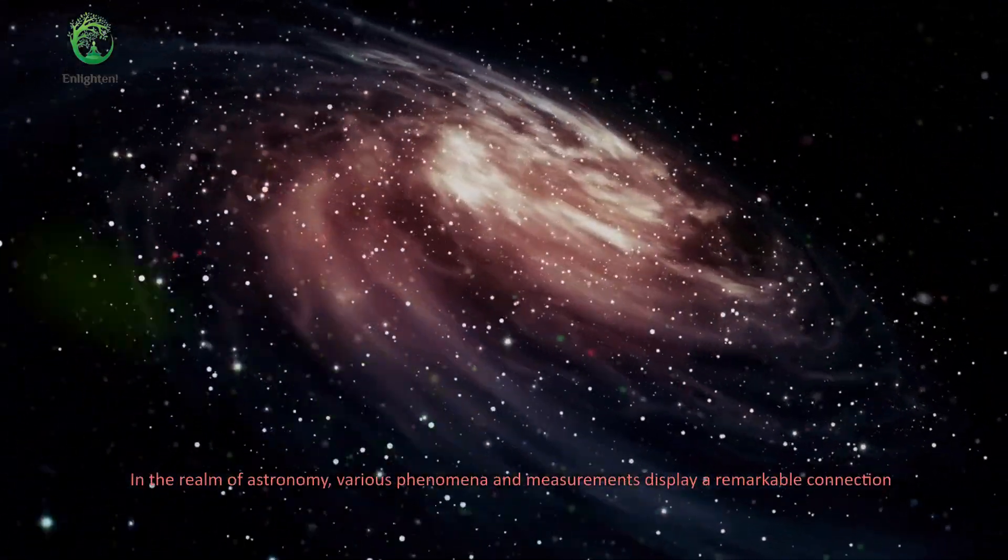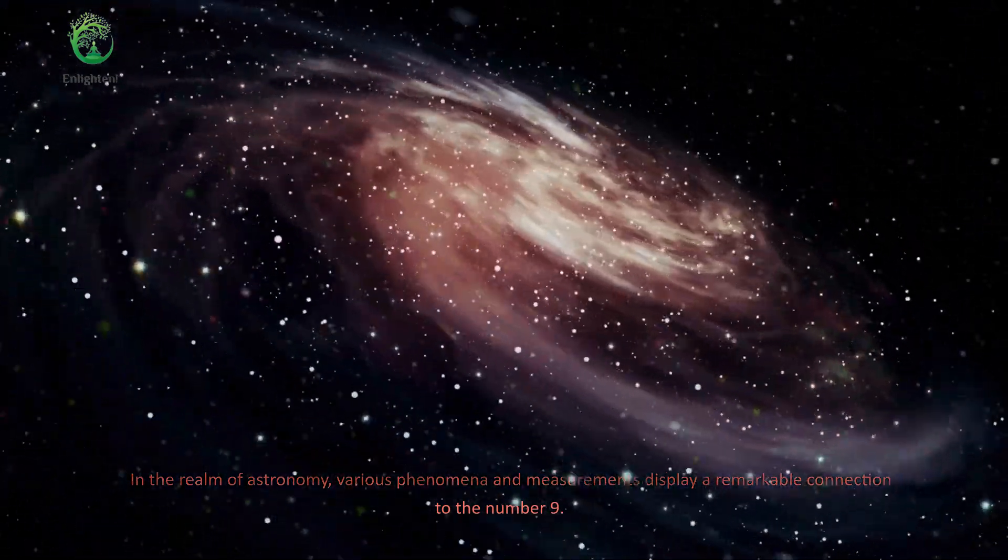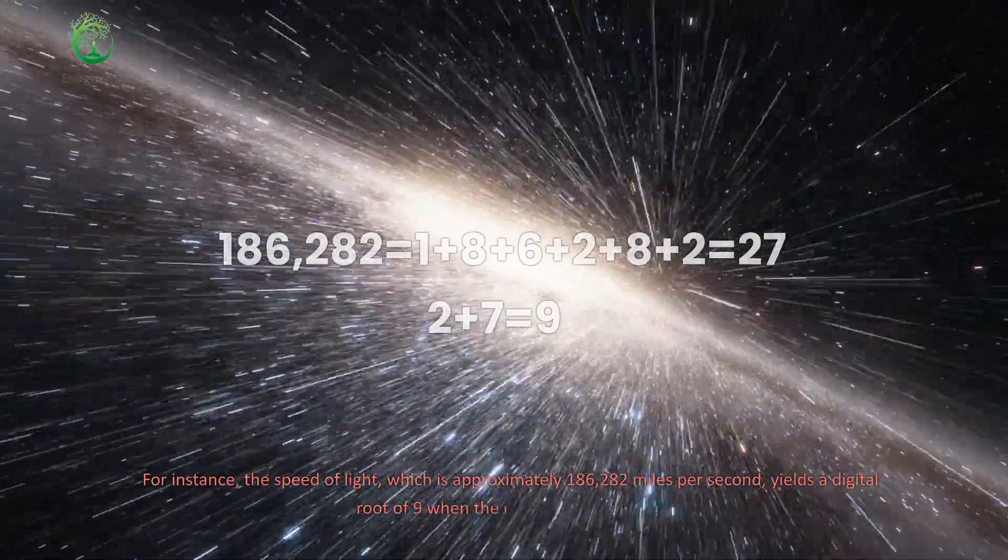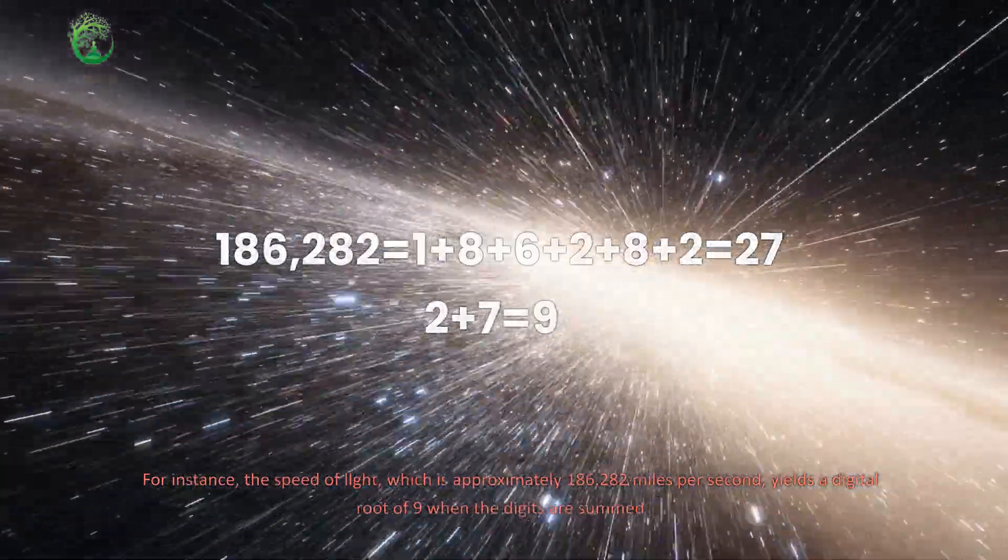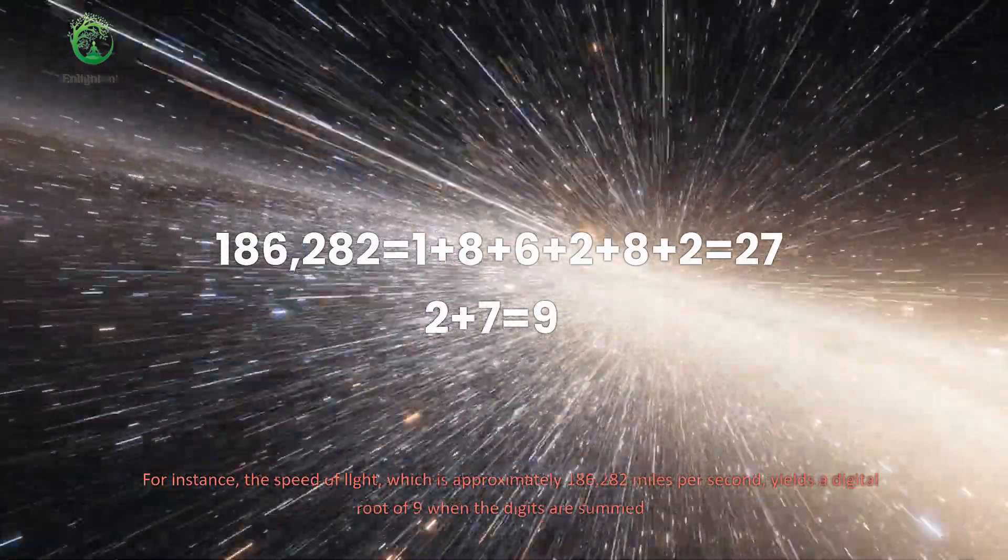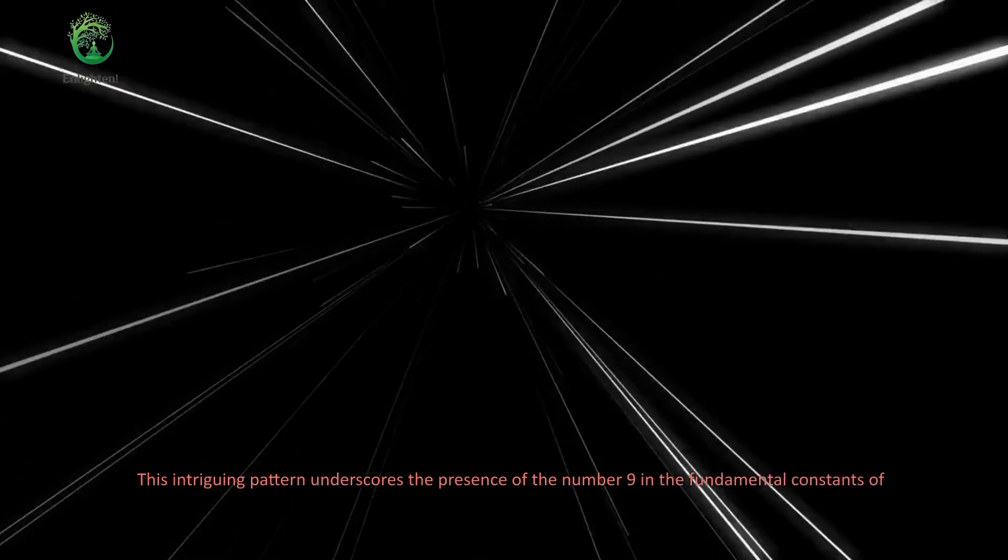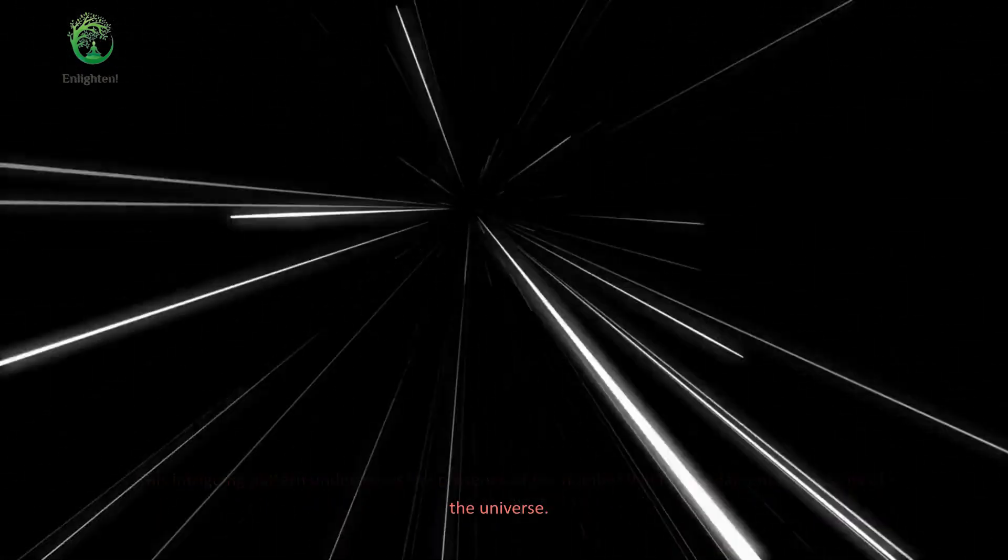In the realm of astronomy, various phenomena and measurements display a remarkable connection to the number 9. For instance, the speed of light, which is approximately 186,282 miles per second, yields a digital root of 9 when the digits are summed. This intriguing pattern underscores the presence of the number 9 in the fundamental constants of the universe.